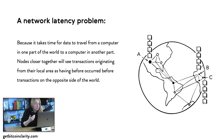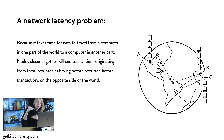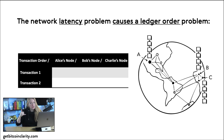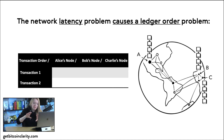Because it takes time for data to travel from computer to computer, nodes that are closer together will see transactions originating from their local area as having occurred before transactions from the opposite side of the world. This network latency problem causes a ledger order problem. The example I want to use involves the US and Australia, and this is what the map shows here.